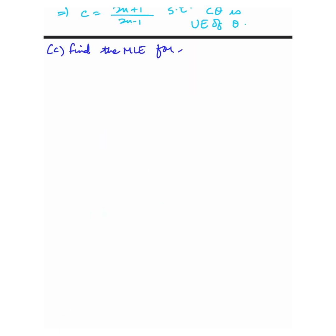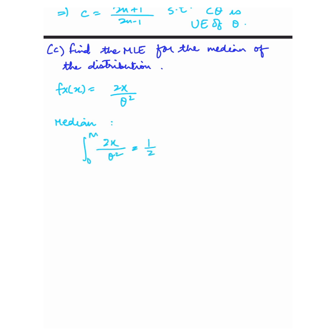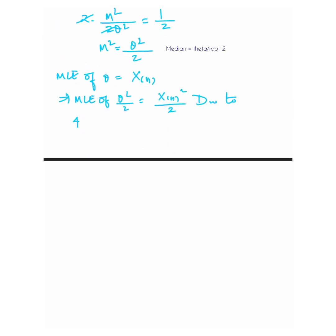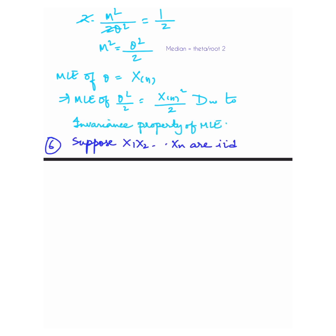We also find the MLE for the median of this distribution. With f(x) equals 2x upon theta squared, the median m satisfies the condition that m squared equals theta squared over 2, giving median equals theta divided by square root of 2. By the invariance property of MLE, the MLE of theta squared over 2 equals x(n) squared over 2. Hence the MLE of the median is x(n) divided by square root of 2.